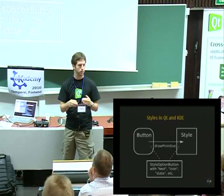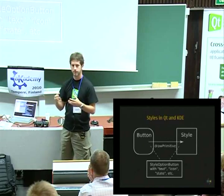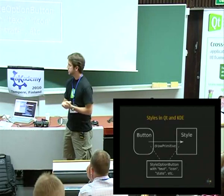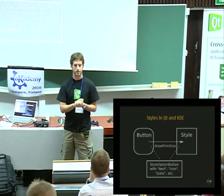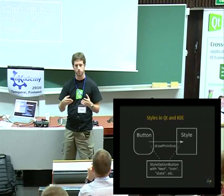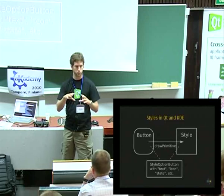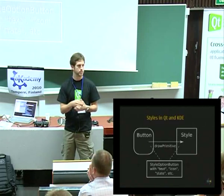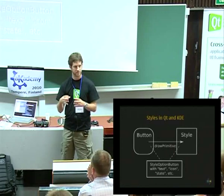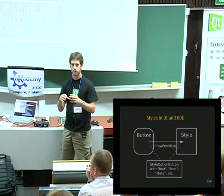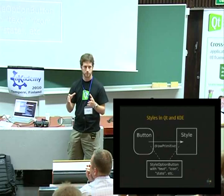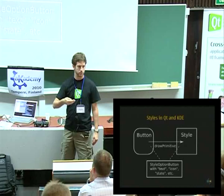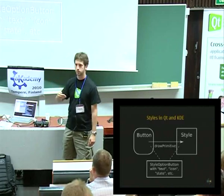That means the button itself does not know if it's going to look gray or blue or have a texture — it's up to the style to decide. The same works for the text, et cetera. But for the style to know how to paint the button, it needs to know whether the button is currently pressed or checked, so it can decide whether to paint the background raised or sunken. It also needs to know the current label or icon. This is done through a style option structure — simply a structure filled by the button with its current status, parsed by the style to paint the primitive accordingly. That's how it works today.